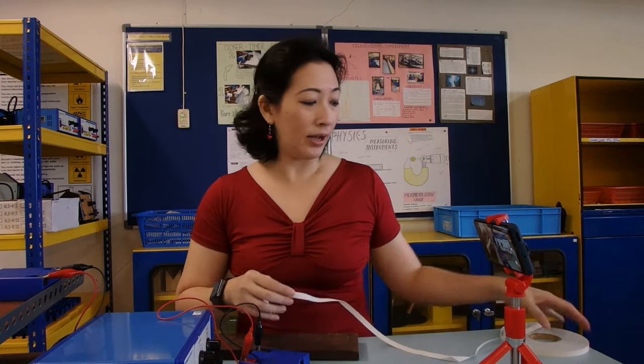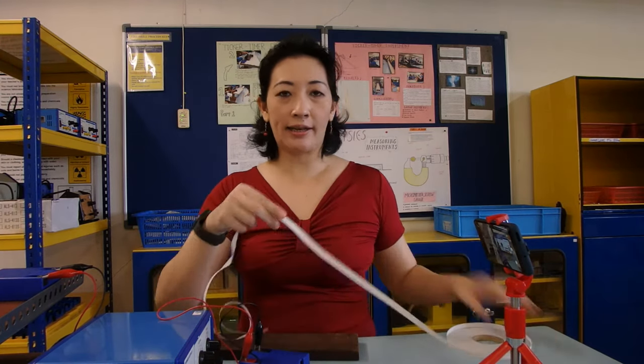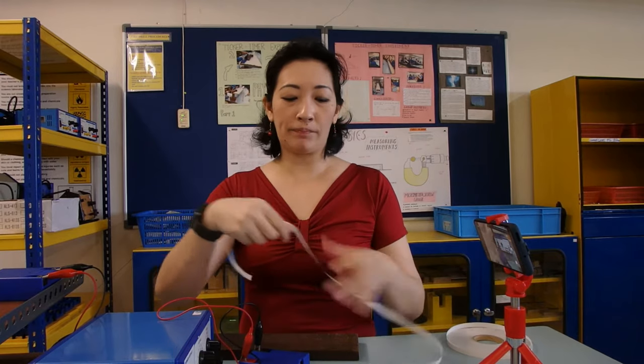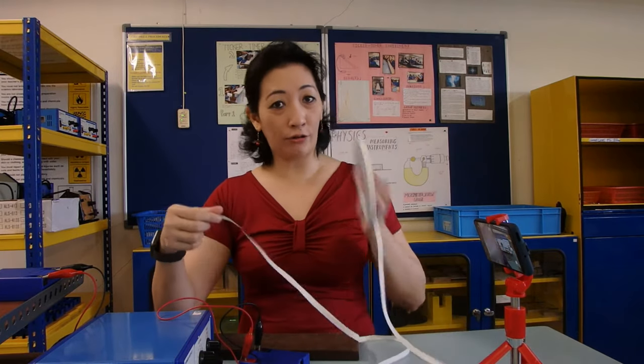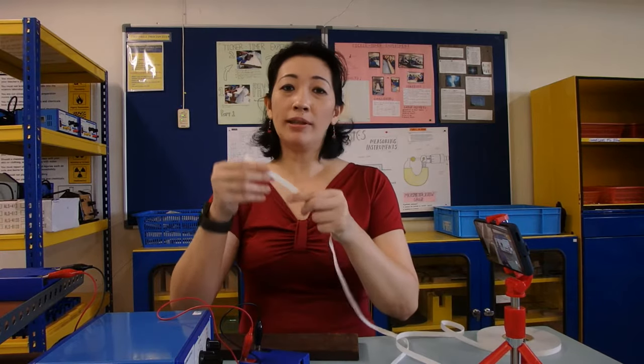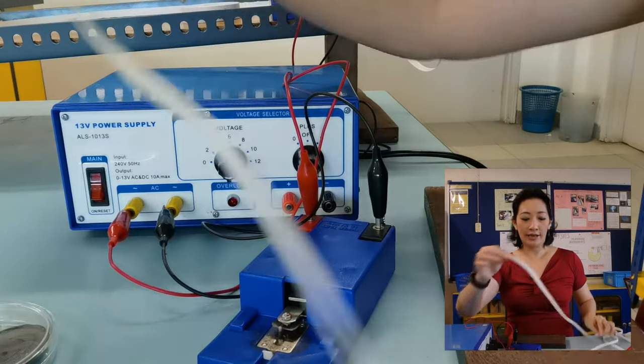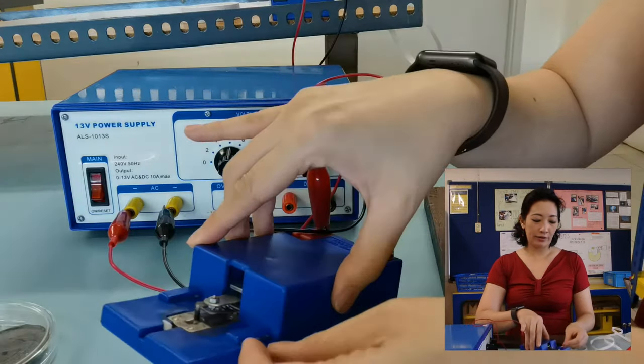How does a ticker timer create dots on paper? You actually need to use something known as a ticker tape. And this is an example of a ticker tape. You can see that this is actually just a strip of white paper. Of course, there's a huge roll here, well, not that big. I've seen larger rolls.